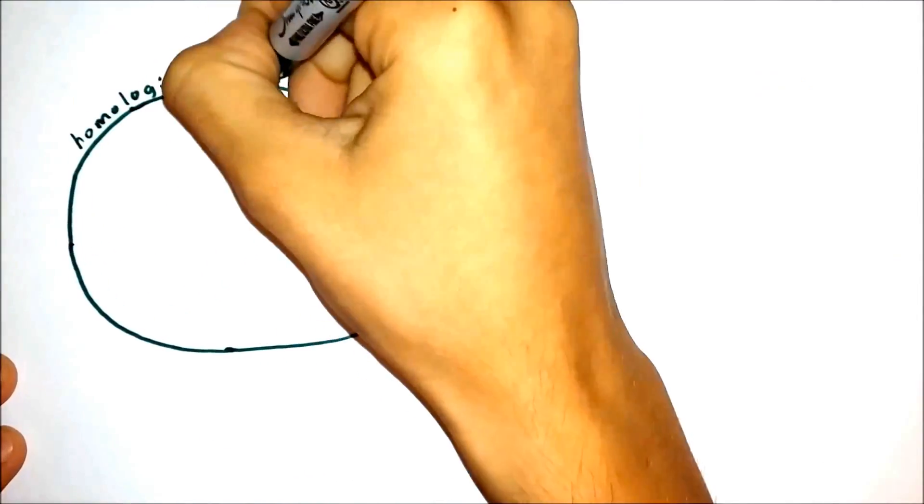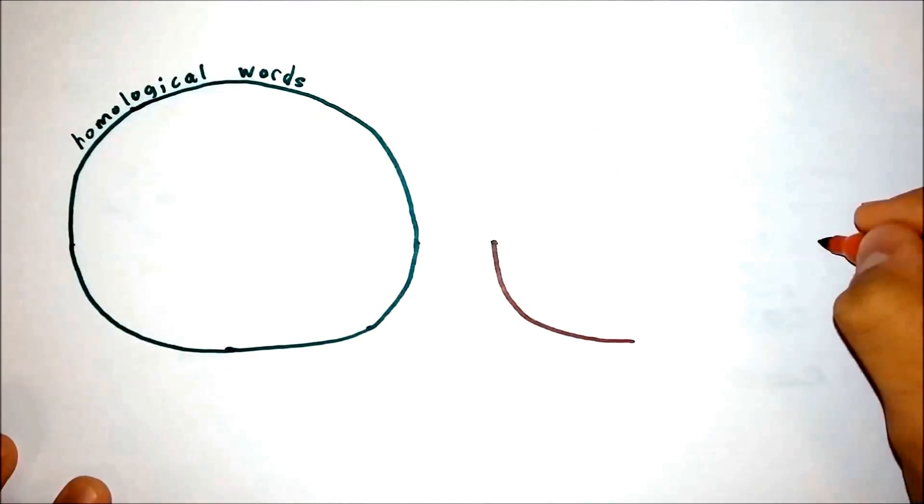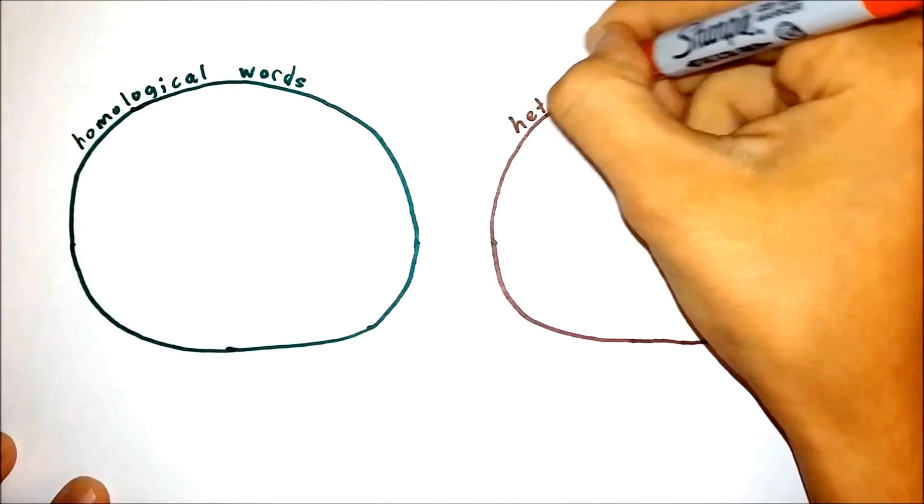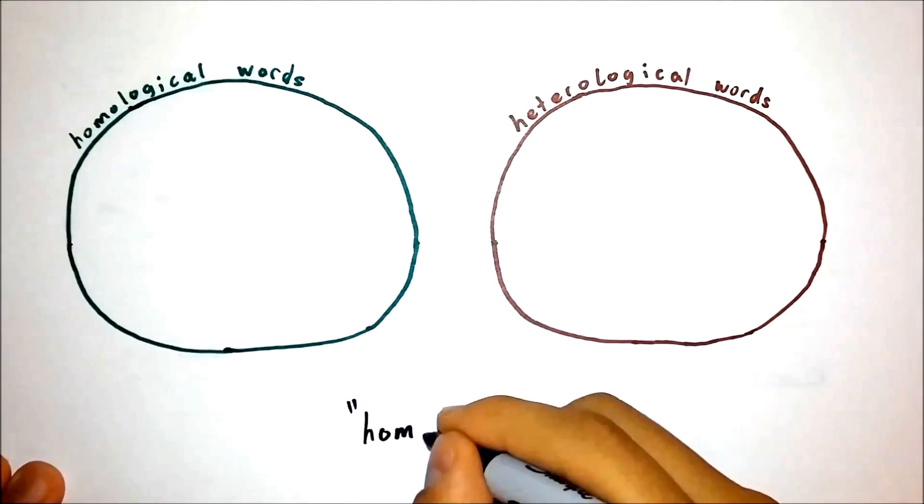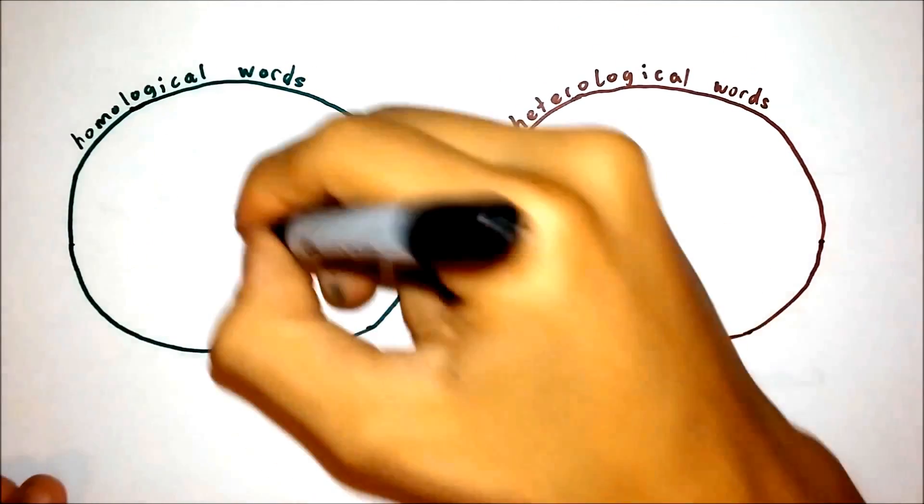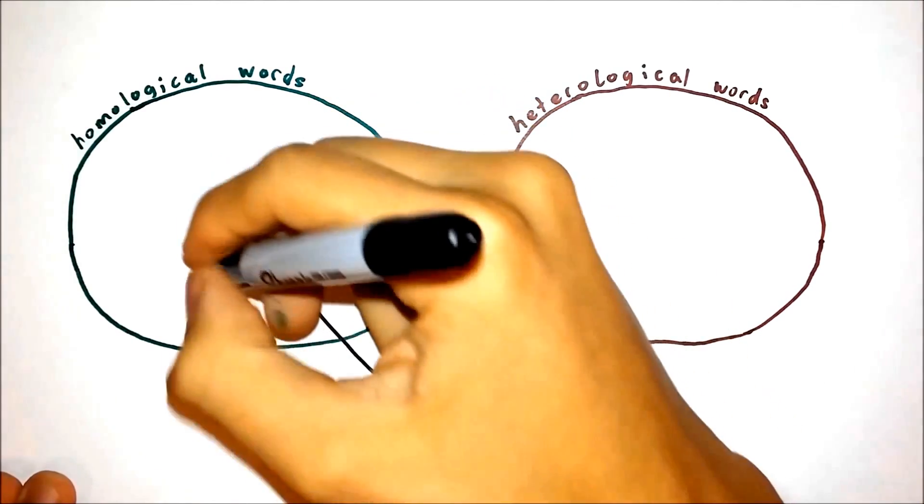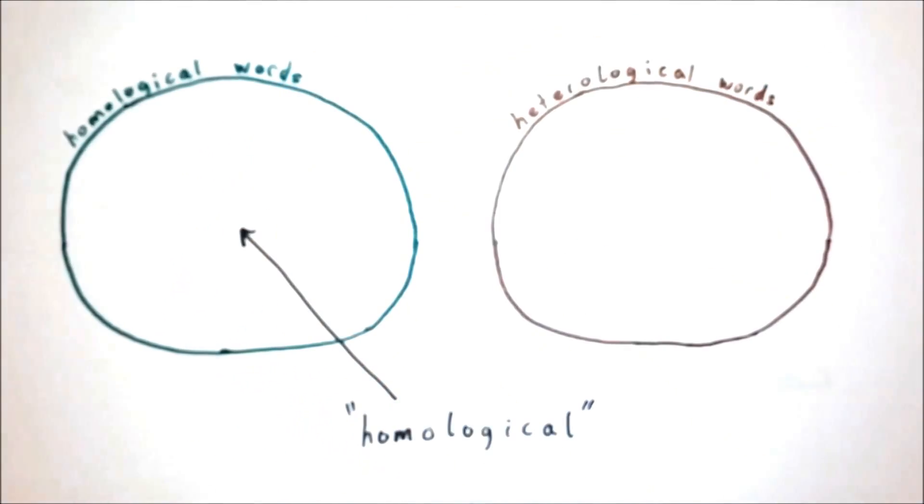There is another interesting consideration here that eliminates yet another law of logic. This arises when we attempt to categorize the word homological. If we assert that this word is homological, that it describes itself, then it describes itself. Great.